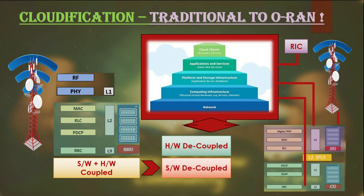Operators just need hardware with general elements for computing, storage, and networking, which they can procure from any hardware supplier. They can put open operating systems on top of that, like Linux. They can also use containers if a cloud-native network is deployed, or alternatively virtual machines. The Centralized Unit and Distribution Unit can use the same hardware through virtualization and hypervisor, and an orchestrator like Kubernetes can manage multiple containers or VMs.